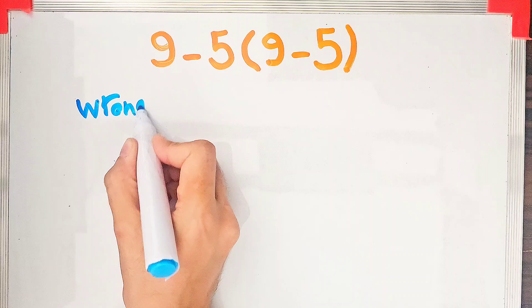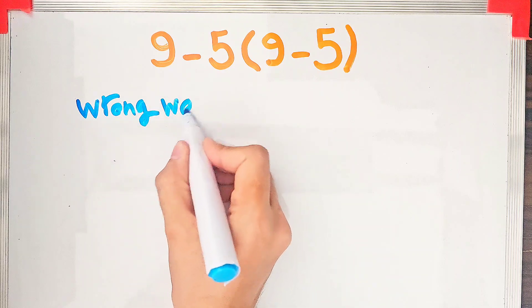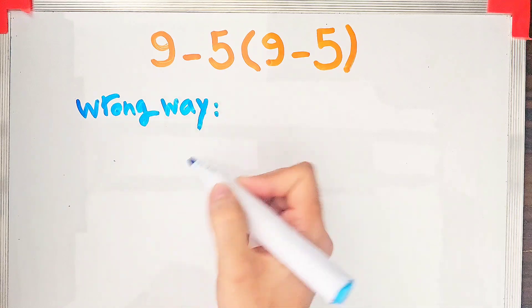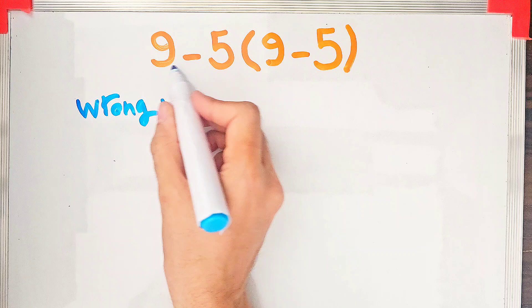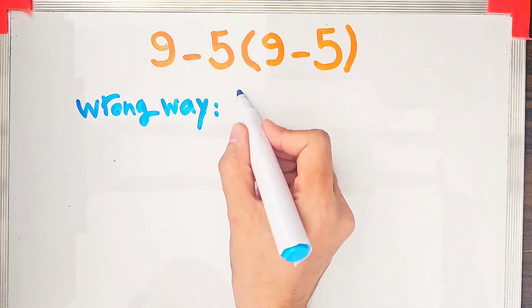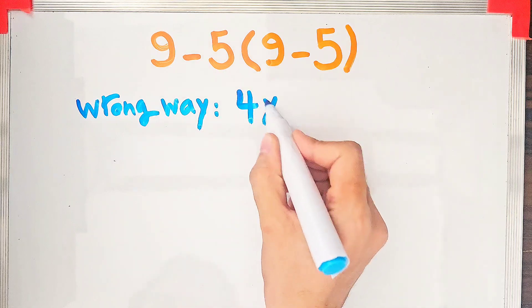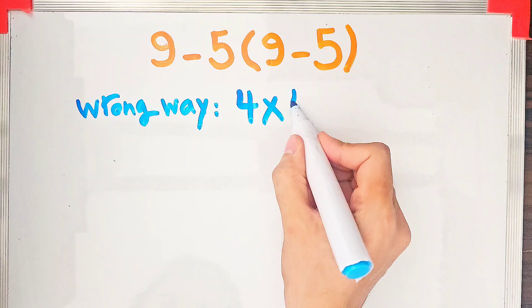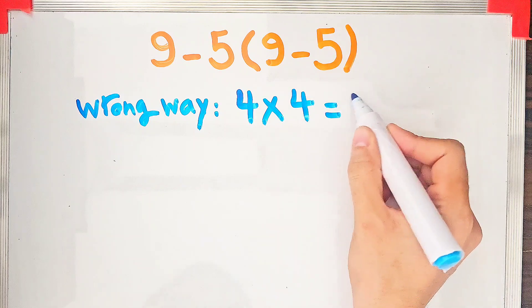In the wrong way of solving this question, some people don't pay attention to the priority of the mathematical operations and they start from the left side of the question and simplify. Nine minus five equals four, four times nine minus five equals four, equals sixteen.